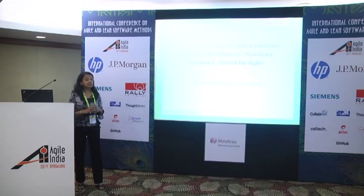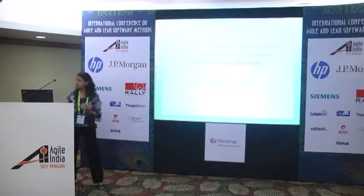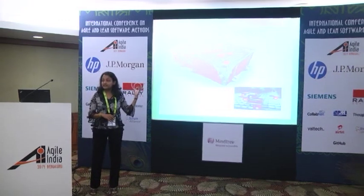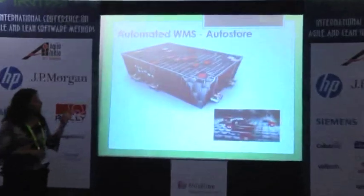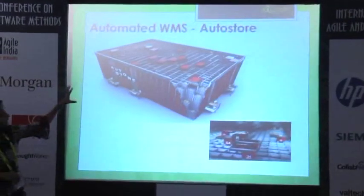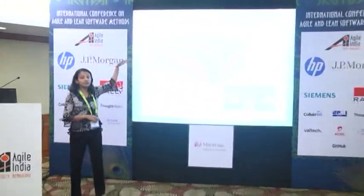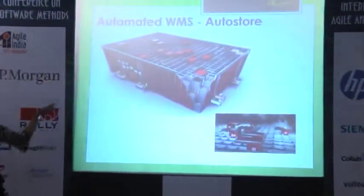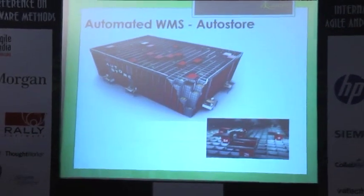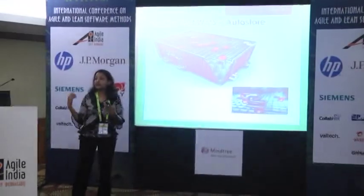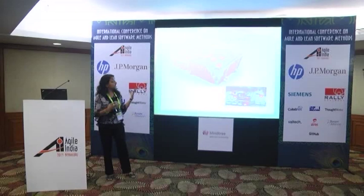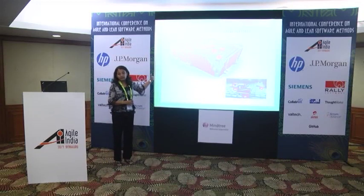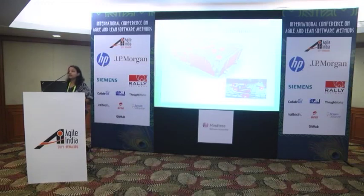You might be thinking, why do I call it alien domains when it's a warehouse management system? Let me explain the complexities we have here. This is one of the automated equipments used by our customers, called the AutoStore. The complexity is that you see a big grid at the top, with a lot of bins stacked on top of each other, and there are robots at the top that pick these bins and bring them to the user.